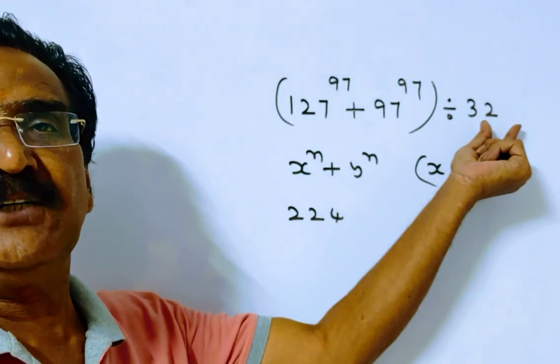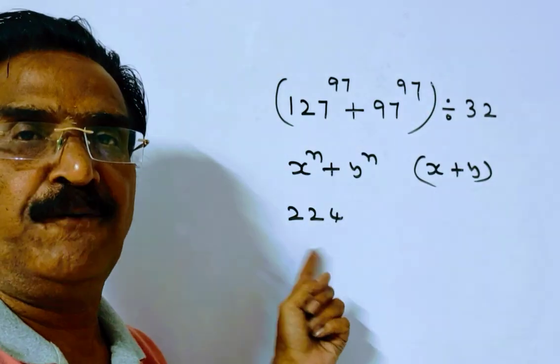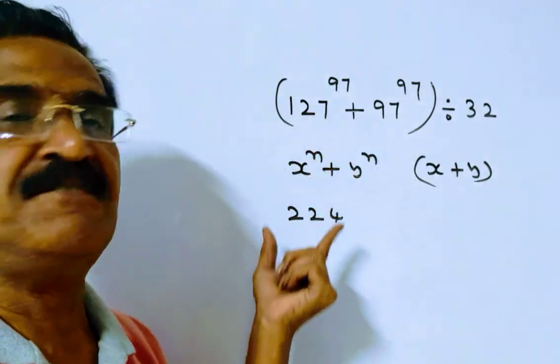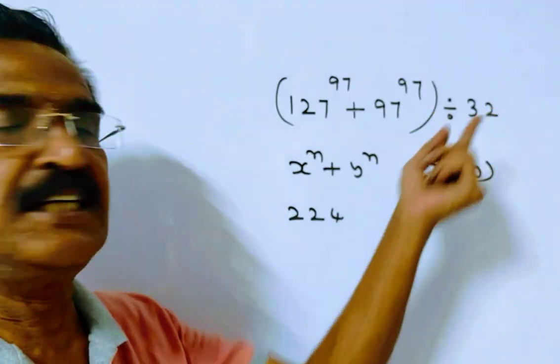Friends, here 32 is a factor of 224. 32 times 7 is 224. So, when this expression is divisible by 224, this expression is divisible by 32 as well.